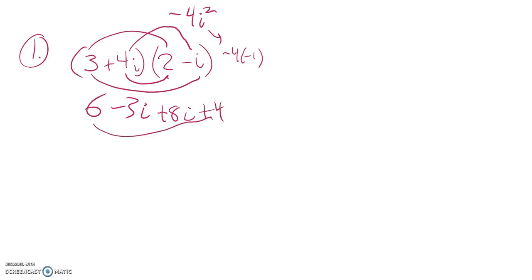Gather up some like terms. There's a 10. And if I've got negative 3i's plus 8i's, that's 5i's positive. And there's my answer.